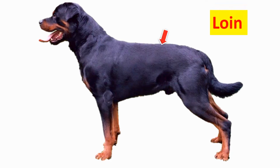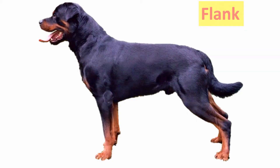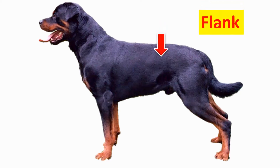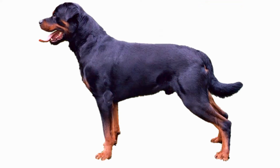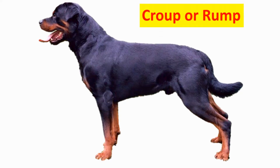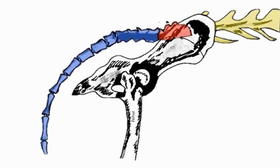Loin — the loin is the back between the end of the ribcage and the beginning of the pelvic bone. Flank — the flank refers to the side of the dog between the end of the chest and the rear leg. Croup or rump — the croup is the portion of the posterior dorsum that is posterior to the loin and anterior to the tail. Anatomically, the rump corresponds to the sacrum.